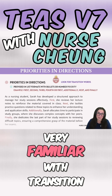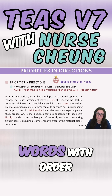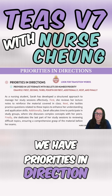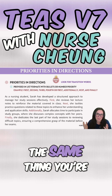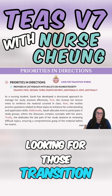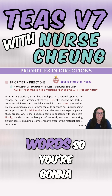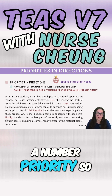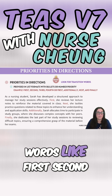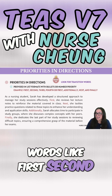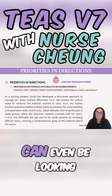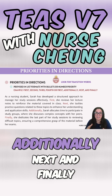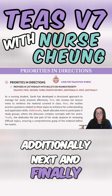We've become very familiar with transition words with order. We have priorities and direction — they're kind of like the same thing. You're looking for those transition words. You're going to be provided with a list with bullets or a number priority. So you're going to look for words like first, second, third, fourth, or you can even be looking for things like first, additionally, next, and finally.